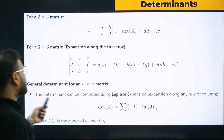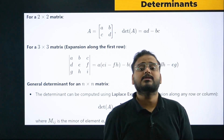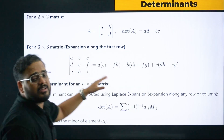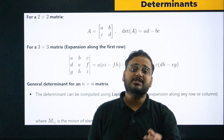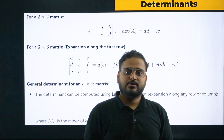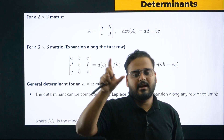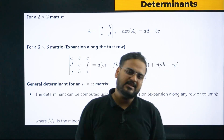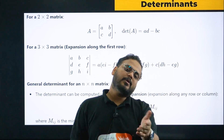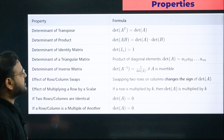For determinants, a question type that is repeated in PYQs involves a matrix with entries like a, b, c arranged in a cyclic pattern, and you get the formula a³ + b³ + c³ − 3abc. You factor it as (a + b + c)(a² + b² + c² − ab − bc − ca), and conclude either a + b + c = 0 or a = b = c. I've taught you all those questions — it's a very important property.